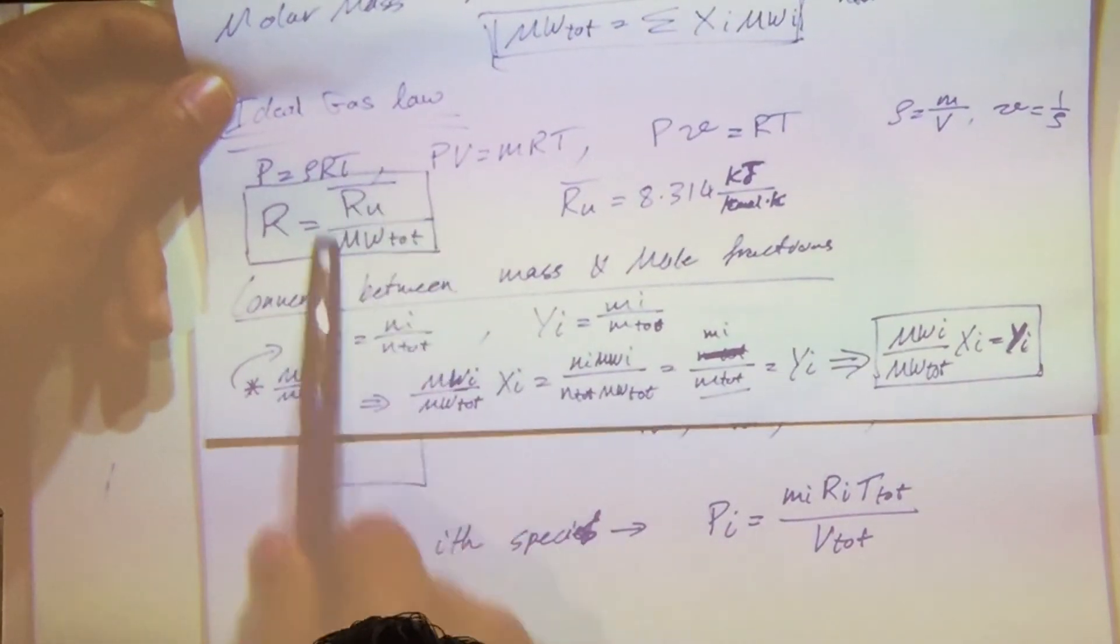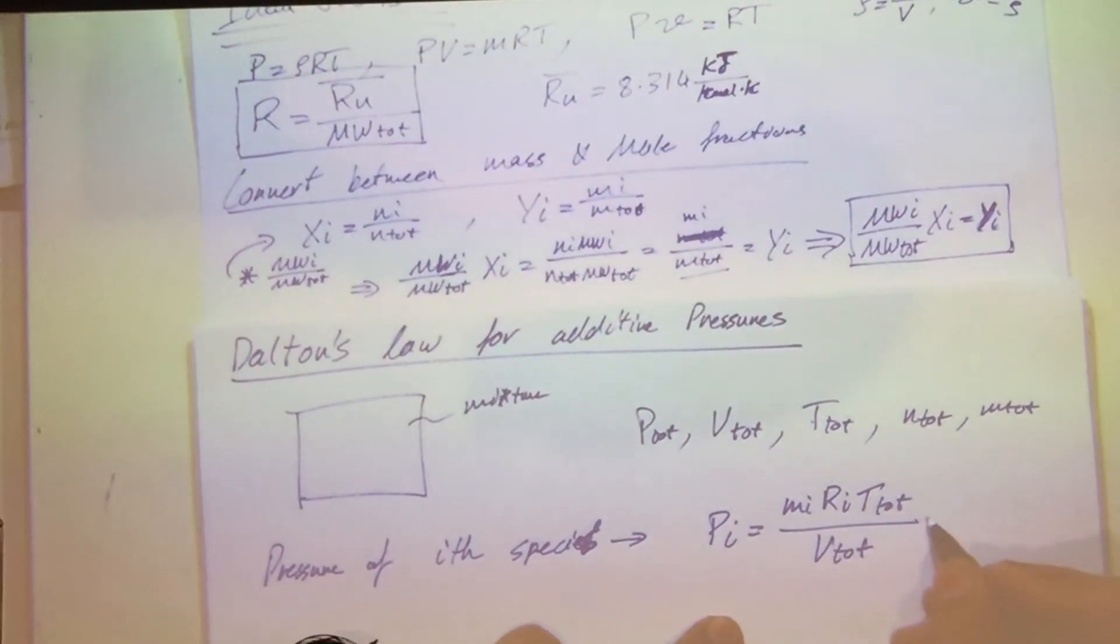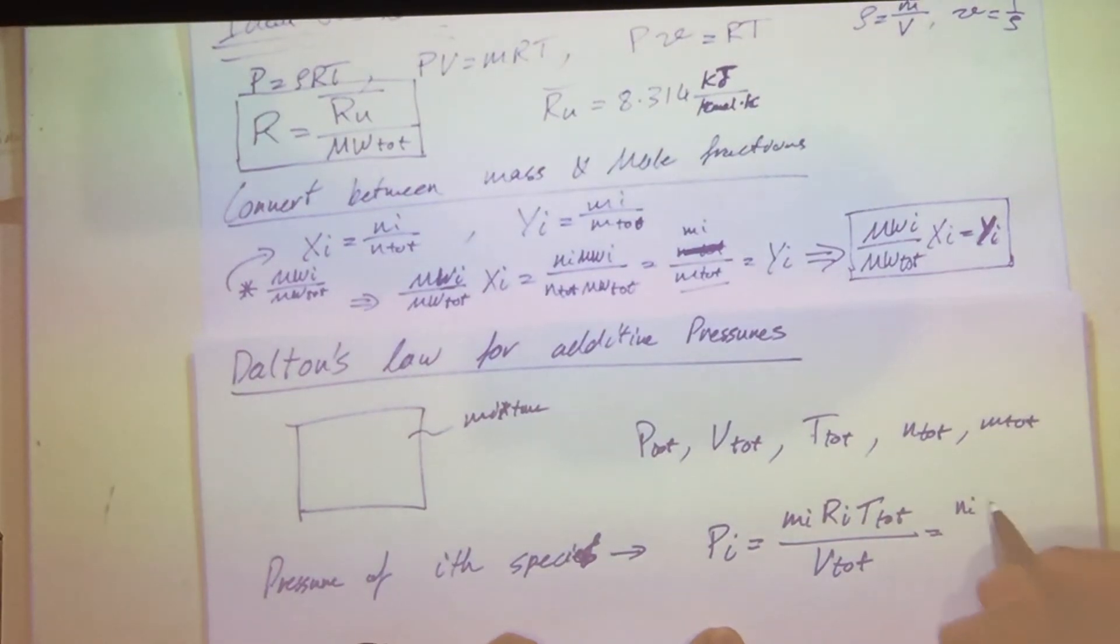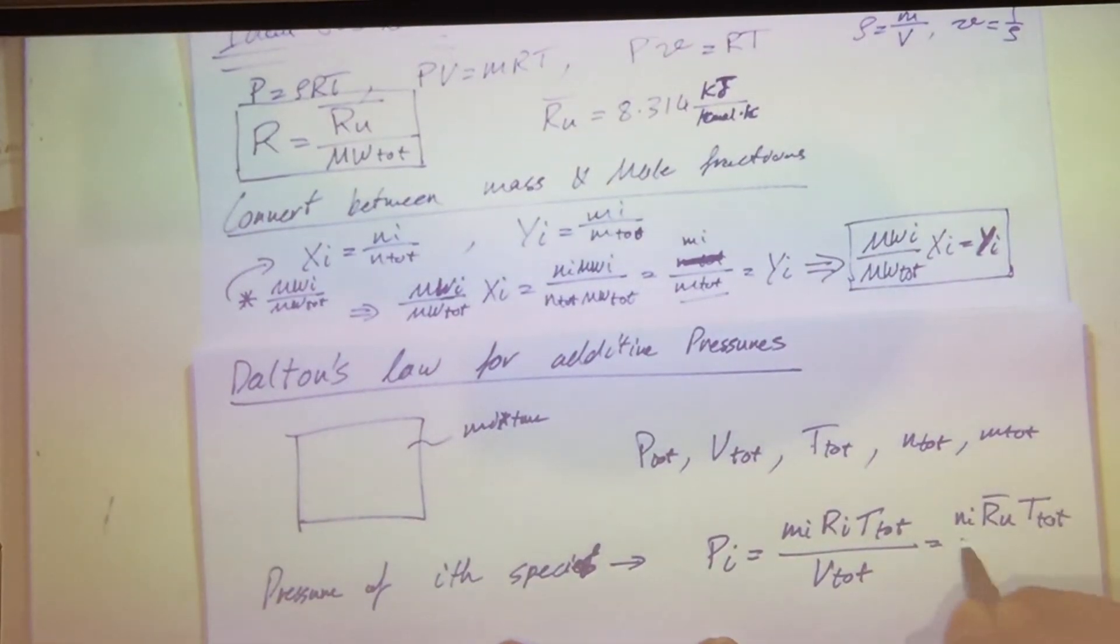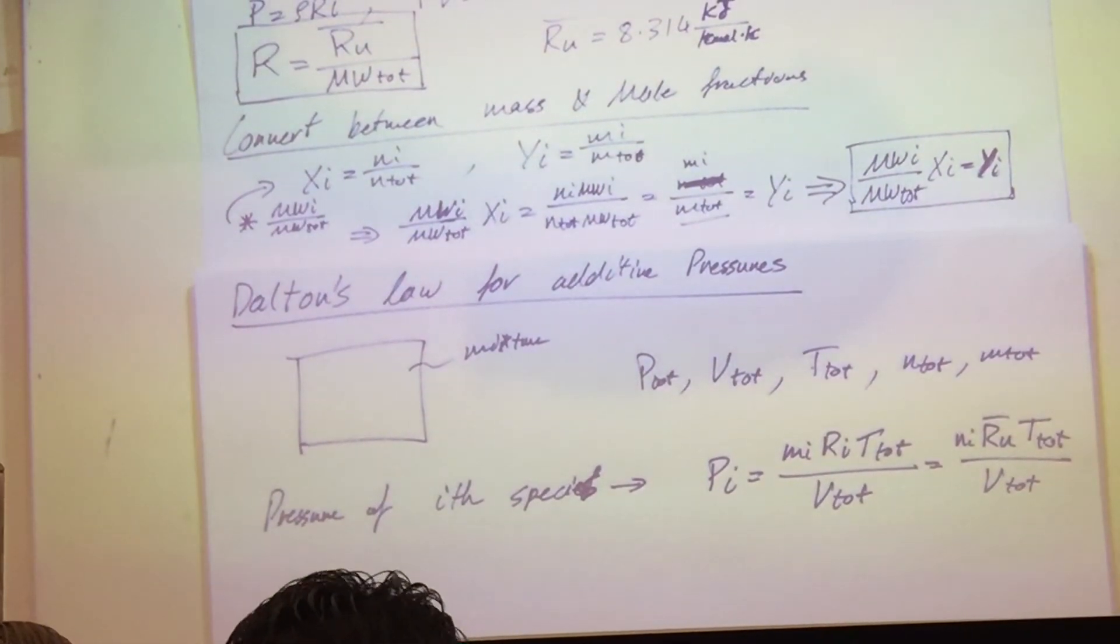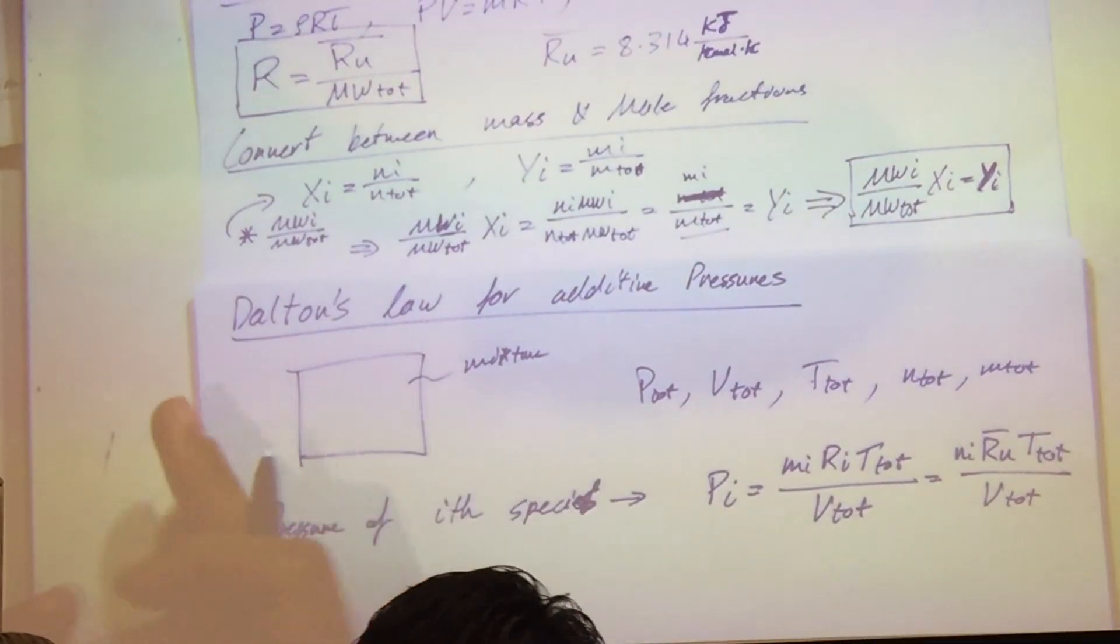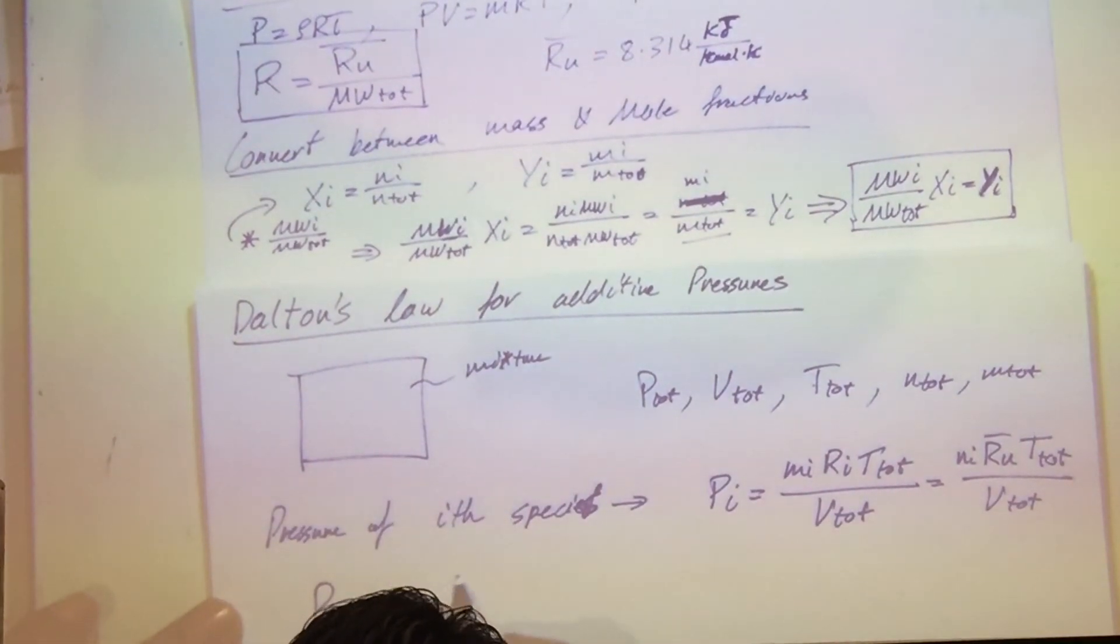So just substitute Ri inside. And what am I going to get for an equation there? It's the number of moles, or the moles for that species divided by the universal gas constant times V total divided by V total. Okay, so from this, I could say that Dalton's Law for additive pressures, the total pressure of my mixture now is equal to my summation of my species of each individual pressure species.